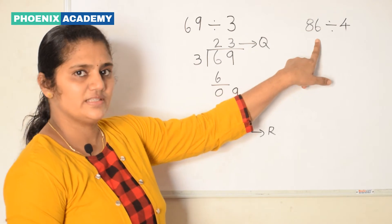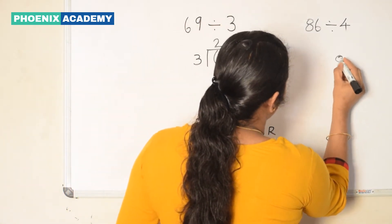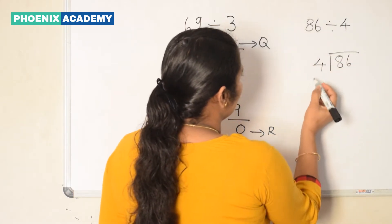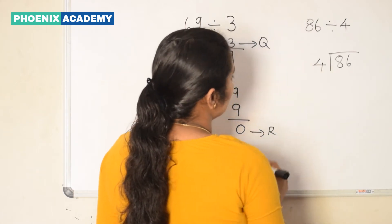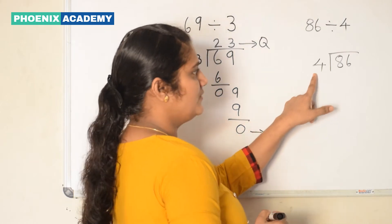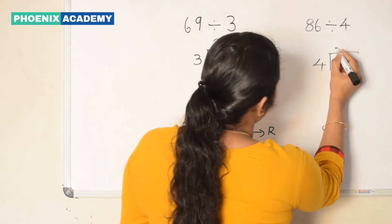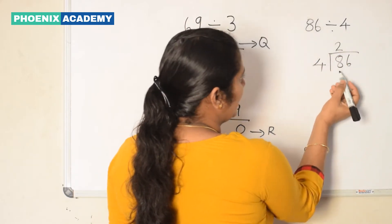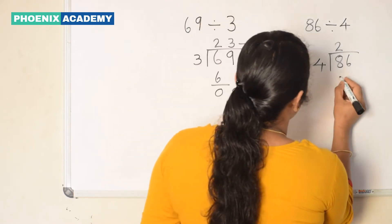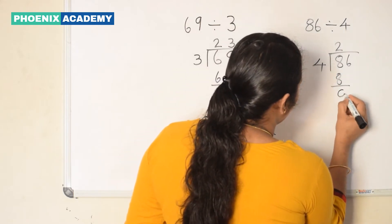Let's solve this example also. 86 divided by 4. Let's write the numbers like this. Then check the digit in the 10th place. Here 8 is greater than 4. So we first divide 8 by 4. Here 2 4s are 8. So we write 2 at the 10th place of the quotient. Subtract. We get 0.